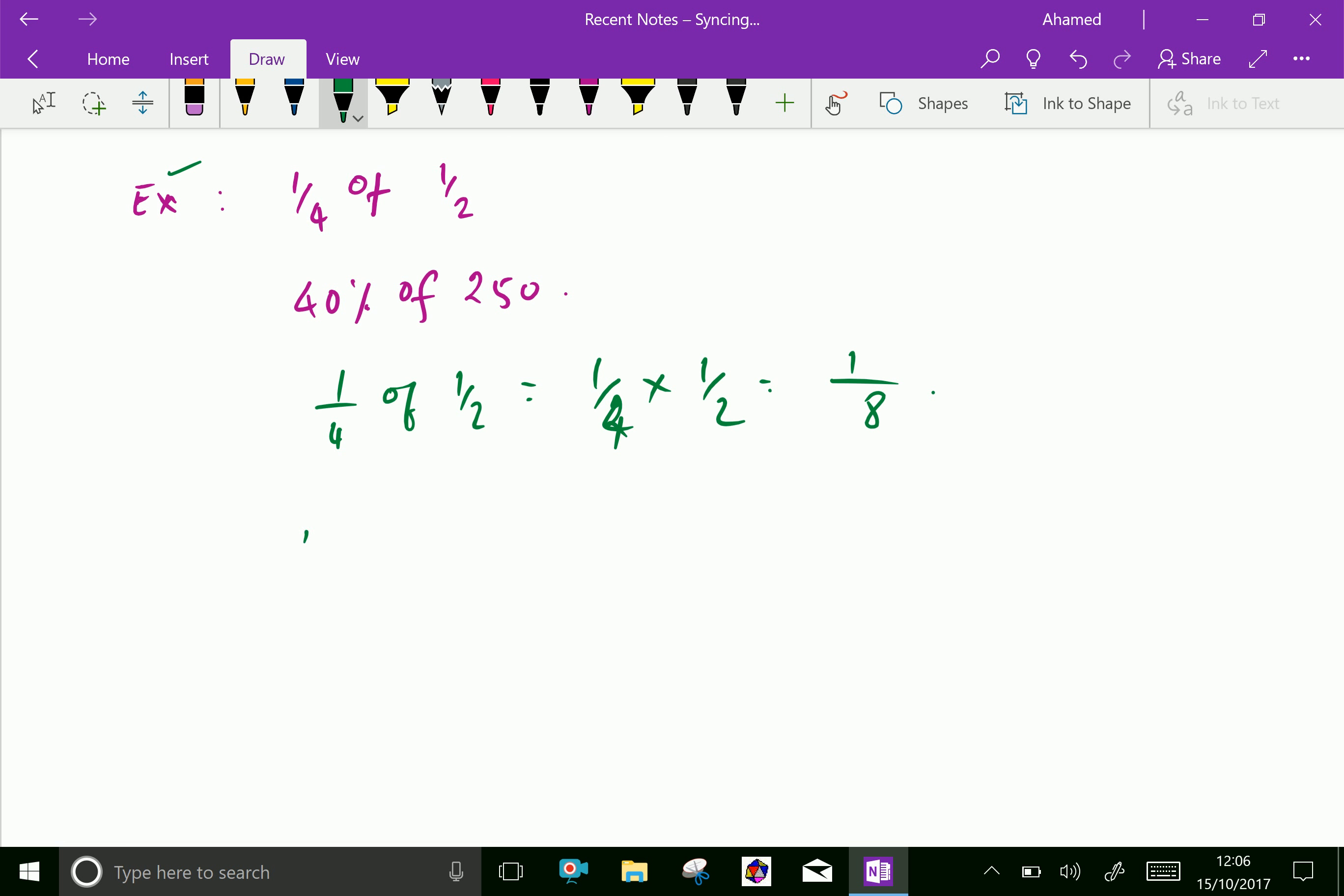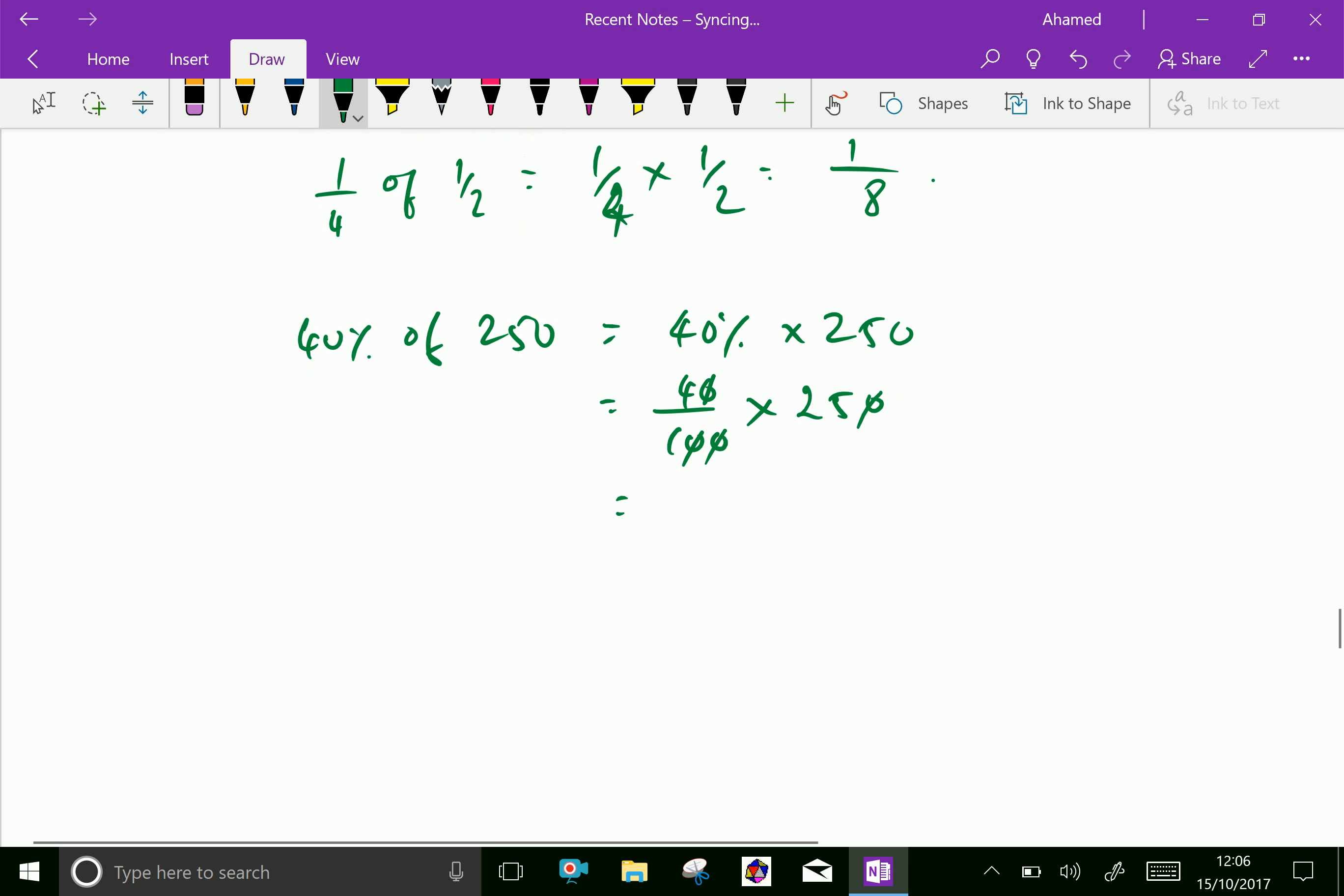Then next one: 40% of 250, which is equal 40% into 250. Percentage you can write as 40 over 100 as a fraction and 250. One 0 here and another 0 here and another 0 here, and 4 into 25 is 100.